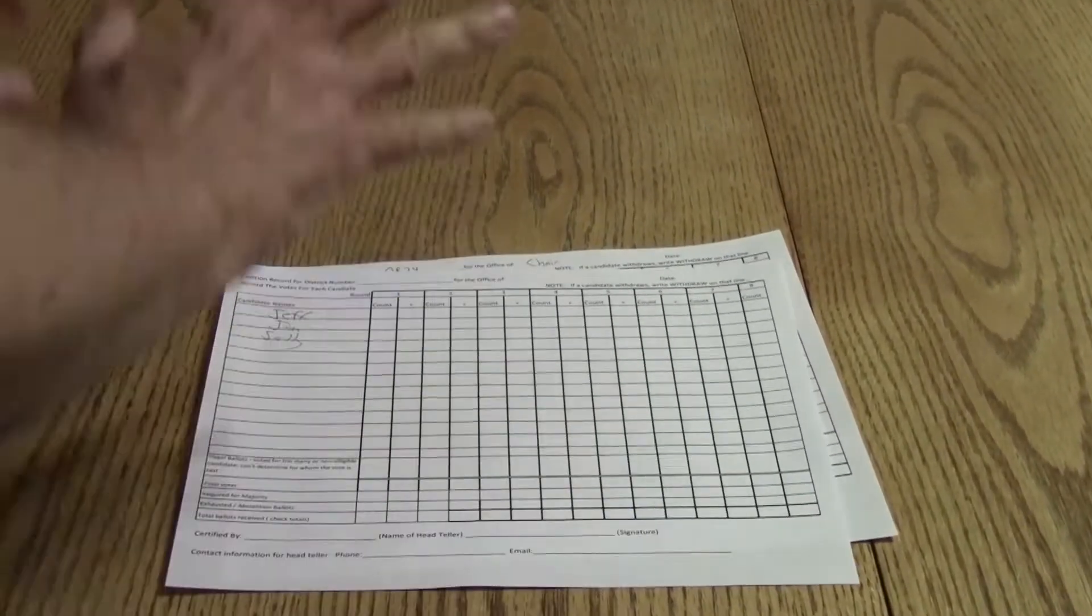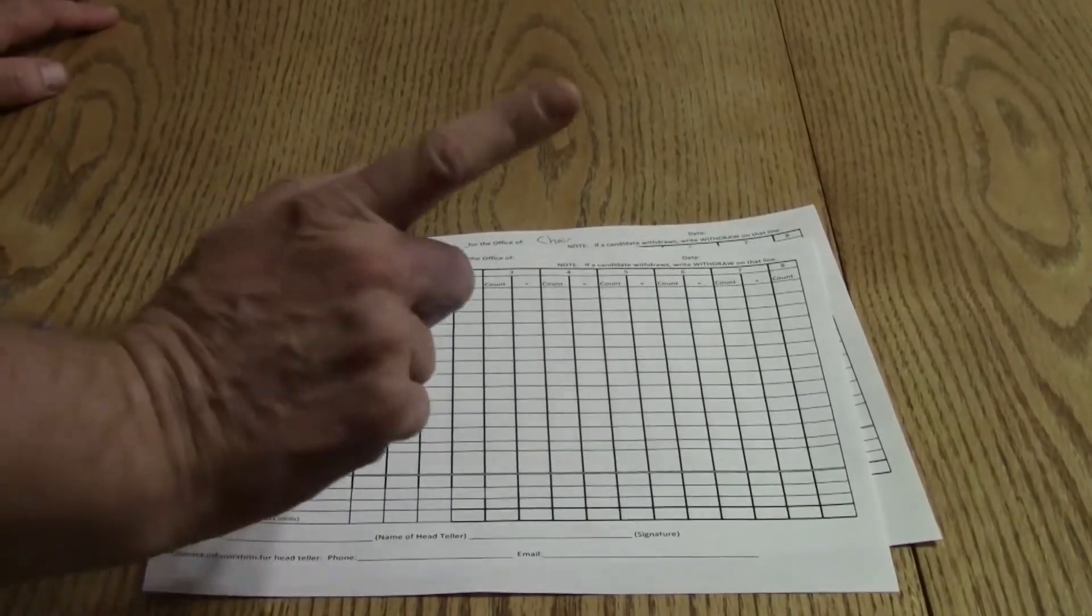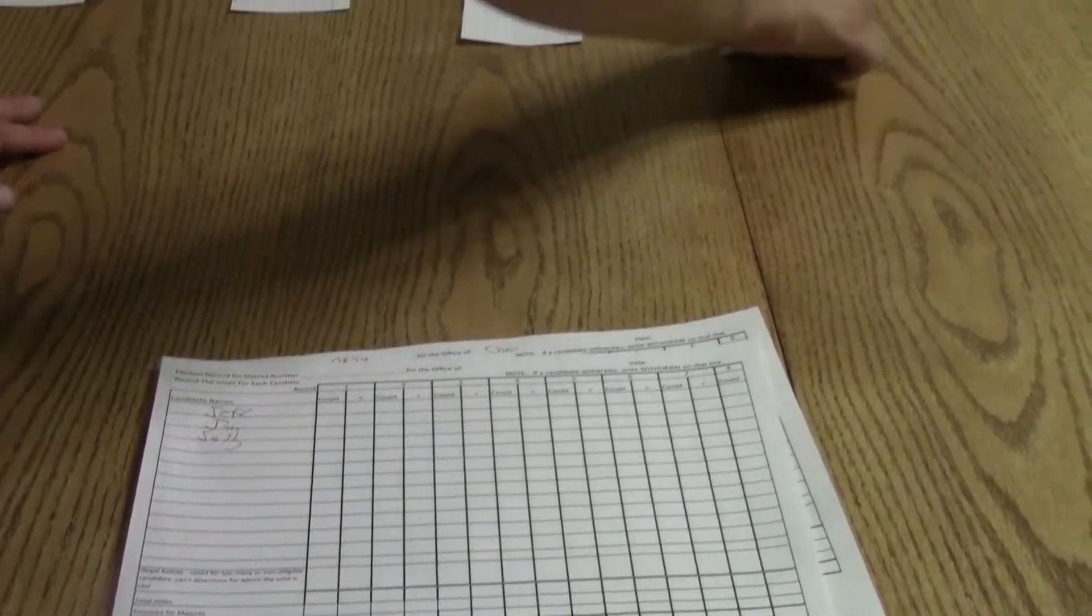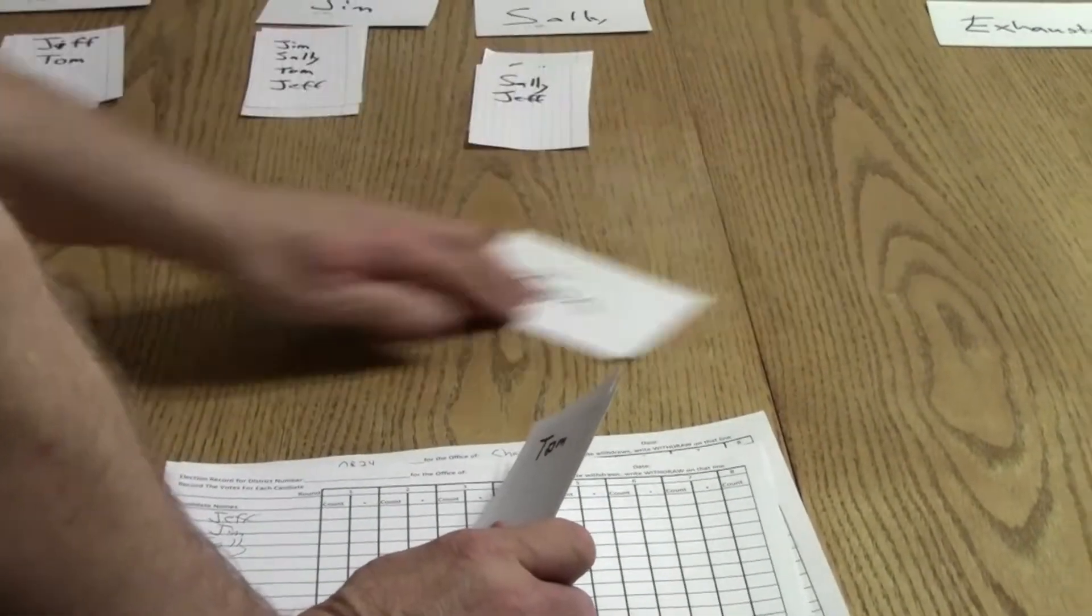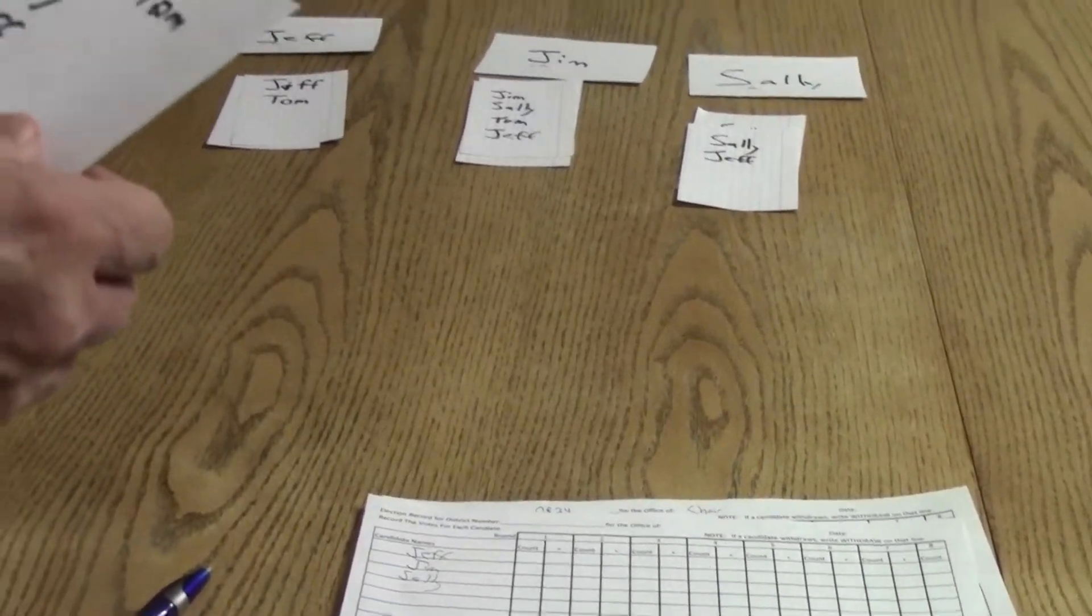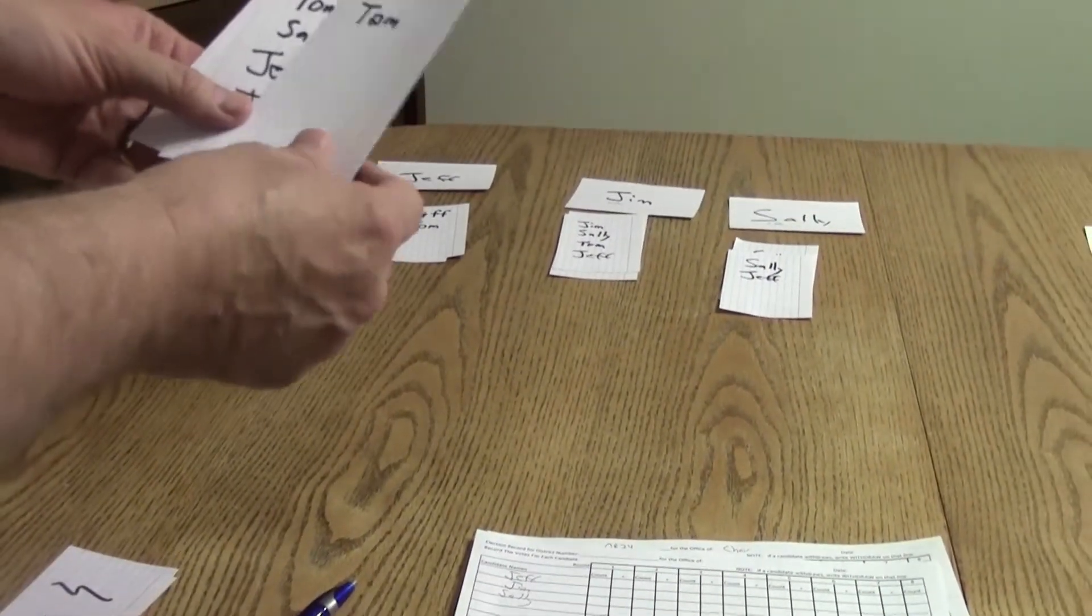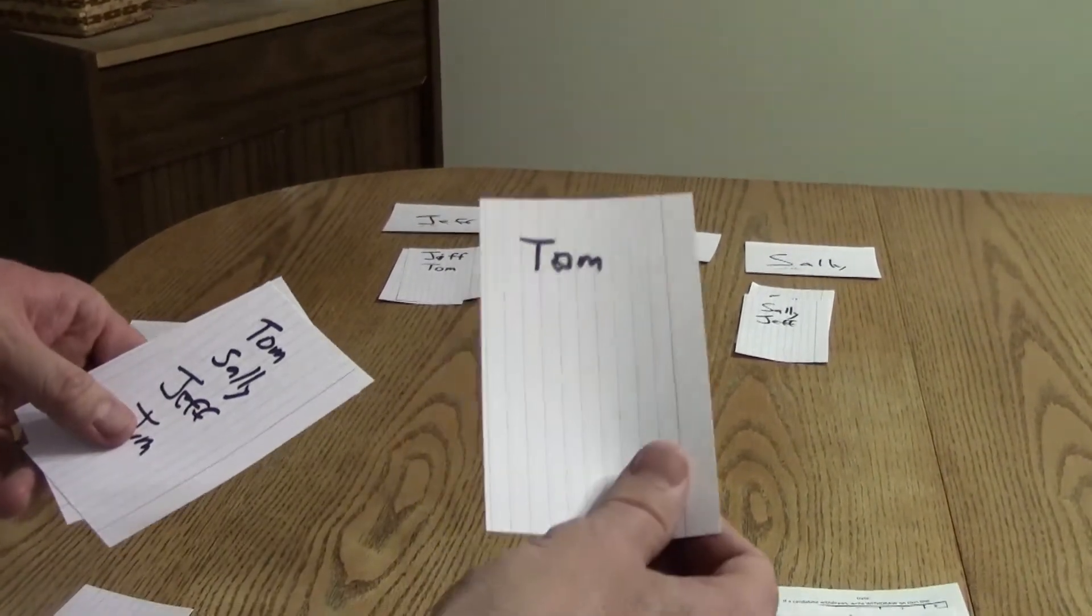Tom has already been elected. So since Tom's eliminated, we're going to take his votes, just like we did before eliminating the bottom, and we're going to eliminate the top. So in this case, this person who voted for Tom, they didn't have a second choice. That goes in the exhausted column.